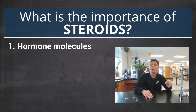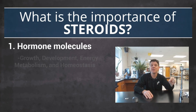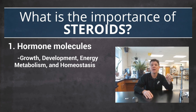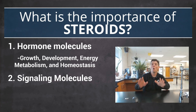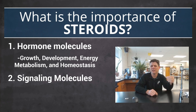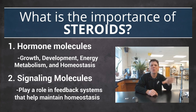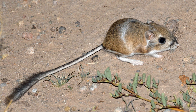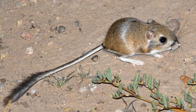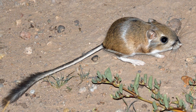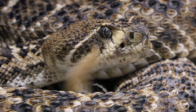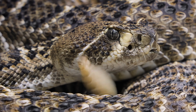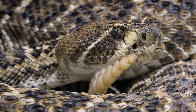Steroids are hormones that support many aspects of physiology including growth, development, energy metabolism, and maintaining homeostasis. Hormones are signaling molecules, which means they play an important role in feedback systems that help maintain homeostasis. One interesting study found that kangaroo rats release stress hormones including glucocorticoids that lower surface body temperatures when they detect the presence of rattlesnakes.